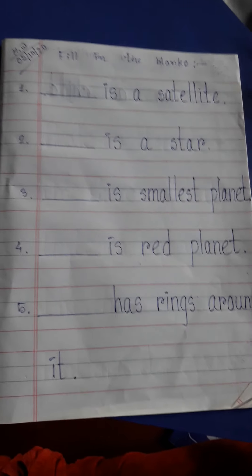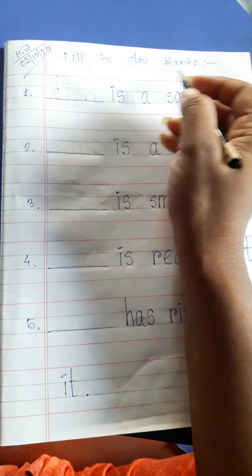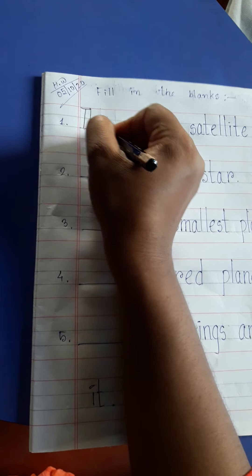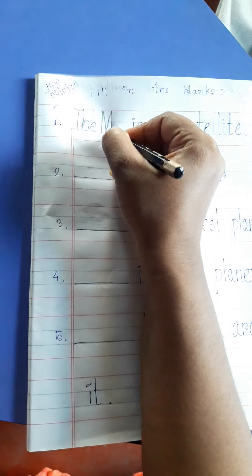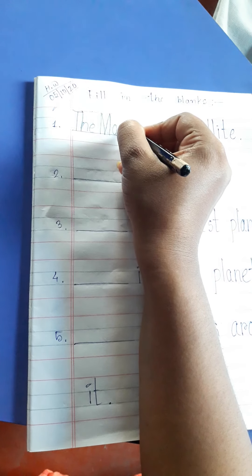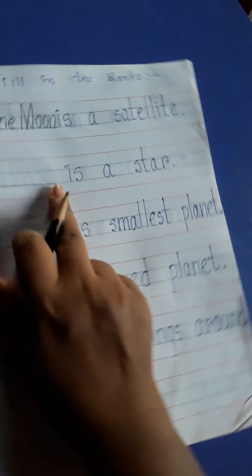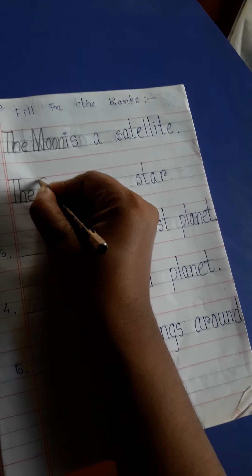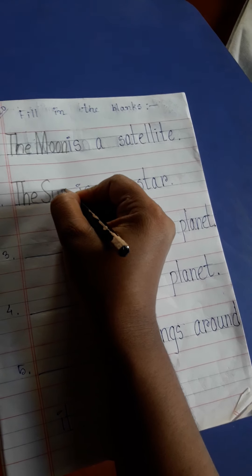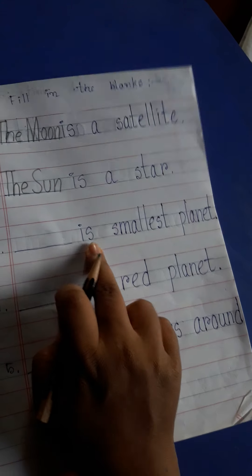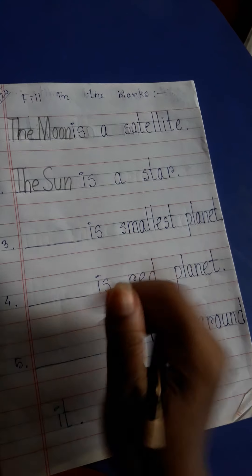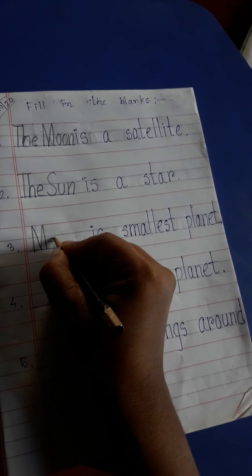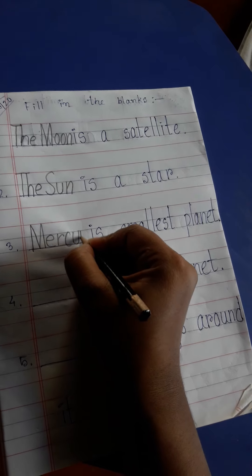Look, it is your concept copywork. Fill in the blanks. The moon is a satellite. The sun is a star. Mercury is smallest planet. M-E-R-C-U-R-Y.